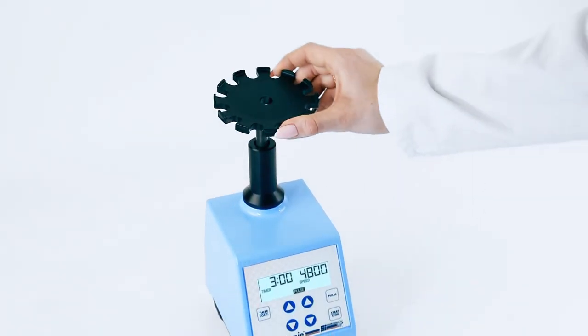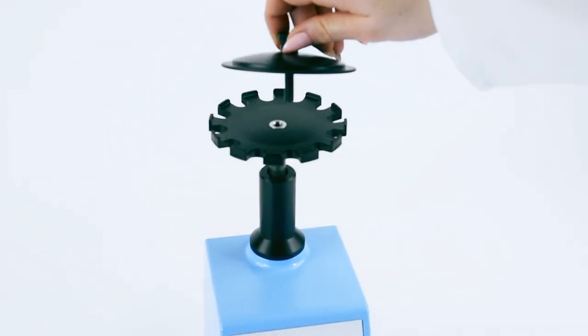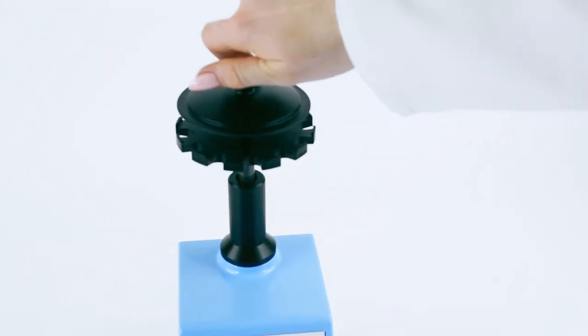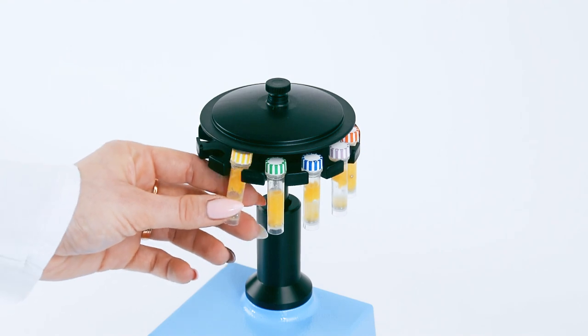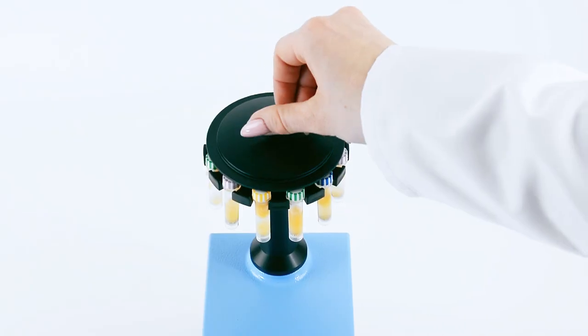Setup is effortless, and there are no tools required. Simply insert the tube holder of your choice, load the tubes with your sample and beads, and secure it with the clamping disc.